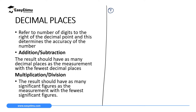For example, if you have a number like 410.345, we start considering the number of decimal places right from the decimal point. The first decimal place is 3, second is 4, third is 5. So this number is expressed to three decimal places.